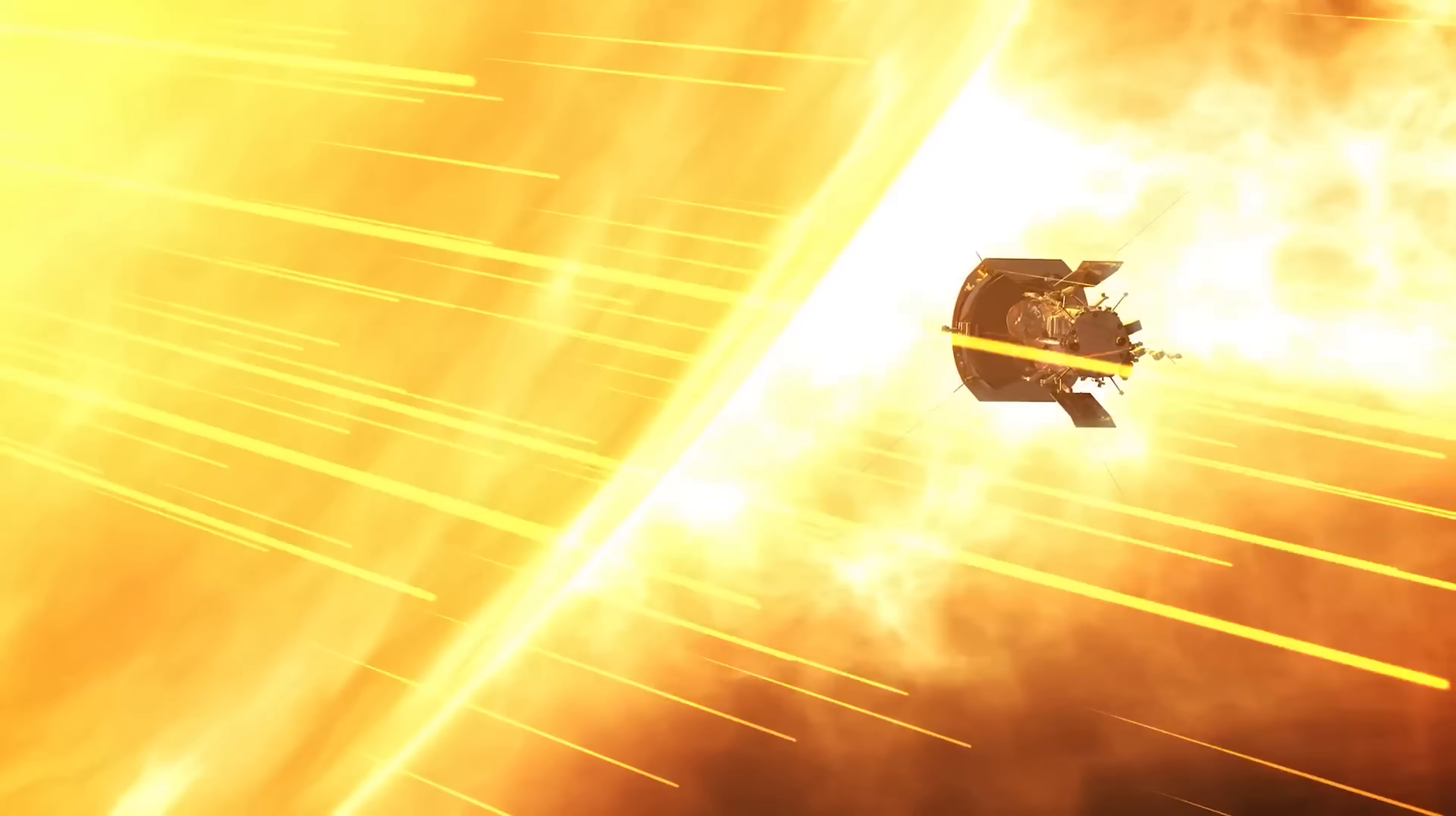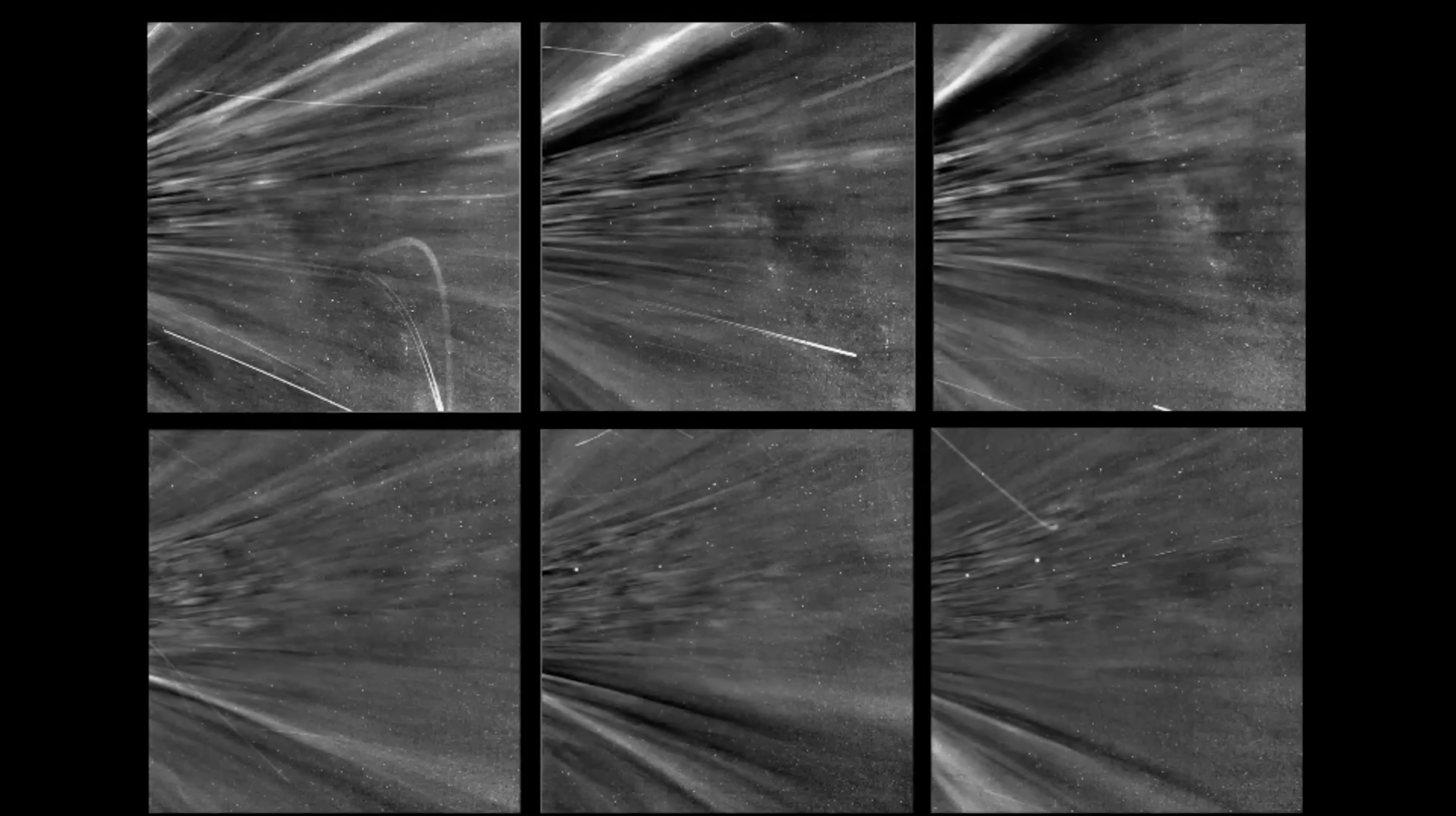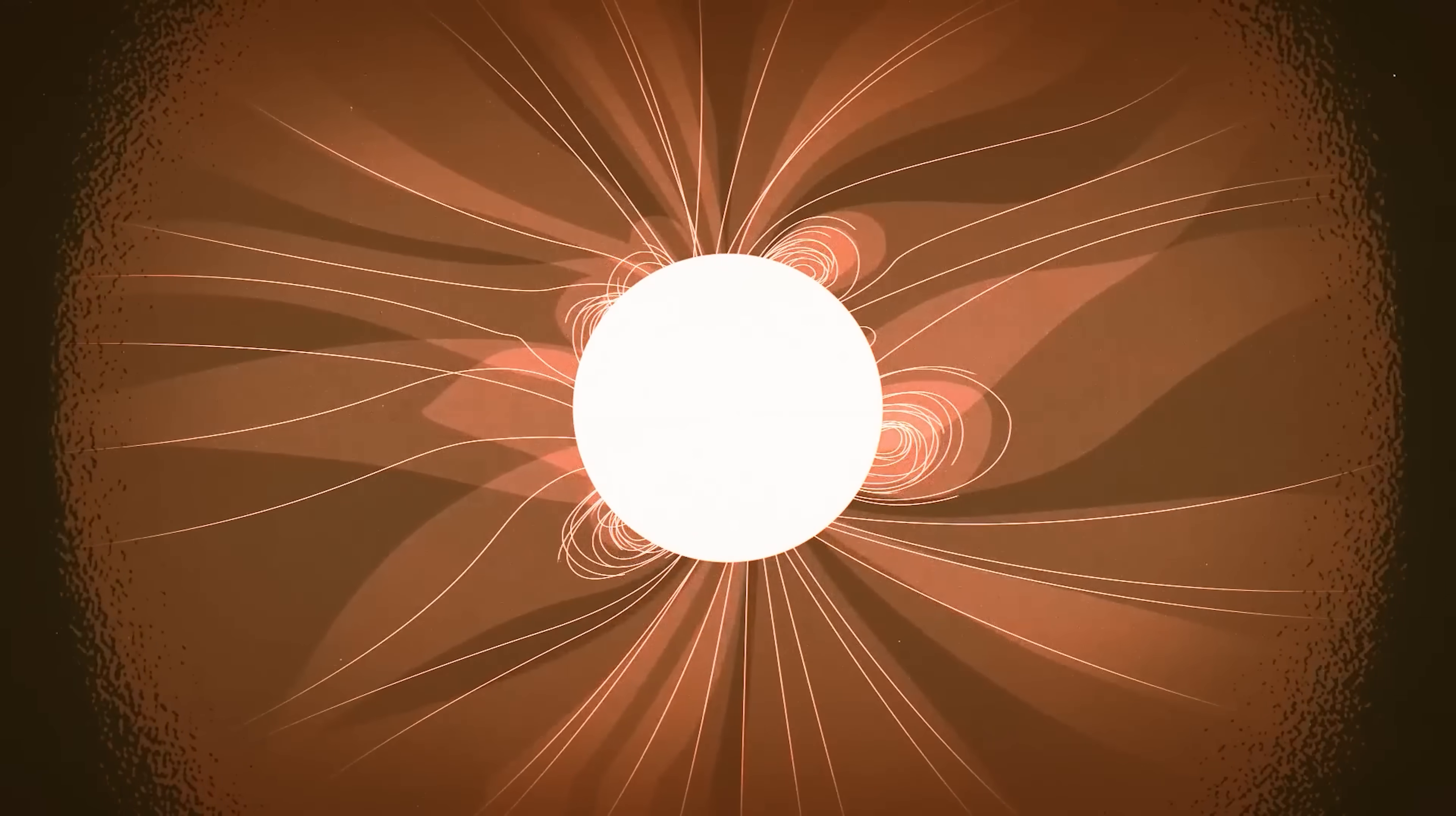And here's the kicker. Parker is already rewriting what we thought we knew. One big surprise, the solar wind isn't as smooth as we imagined. It's filled with zigzagging kinks, almost like magnetic switchbacks. Scientists still don't fully understand what's causing them, but Parker's data is bringing us closer. Another mind blower? Parker found that solar dust gets pushed away from the sun's vicinity, creating a mysterious dust-free zone. It's something we've theorized, but never actually observed, until now.